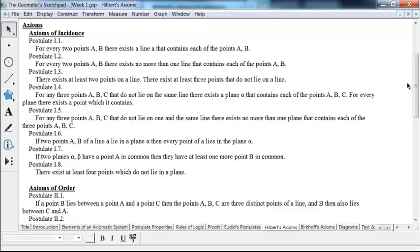For example, postulate I1 is, for every two points A and B, there exists a line that contains each of the points A and B. And in postulate I2, for every two points A and B, there exists no more than one line containing each of the points A and B. You could have said those two together by saying, for every two points A and B, there exists exactly one line containing each of the points A and B. And that statement is also by what we mean when we say points A and B determine a line. That's what we mean by it. This is, of course, more precise the way Hilbert has said it.